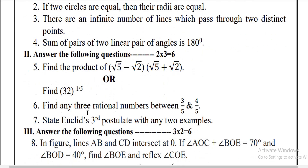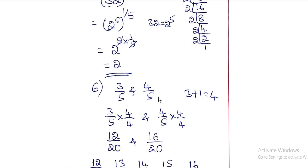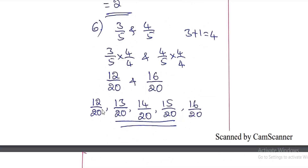Next question: find any 3 rational numbers between 3/5 and 4/5. We need 3 rational numbers, so we add 1, giving 4. Multiply numerator and denominator of both fractions by 4: 3/5 becomes 12/20 and 4/5 becomes 16/20. Between 12/20 and 16/20 the three rational numbers are 13/20, 14/20, and 15/20. These are the 3 rational numbers between 3/5 and 4/5.